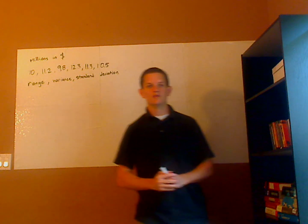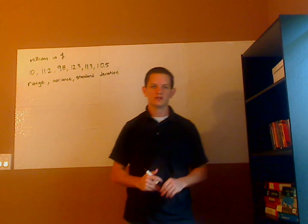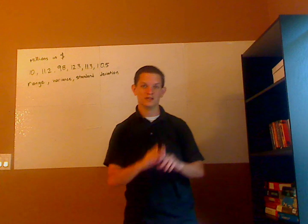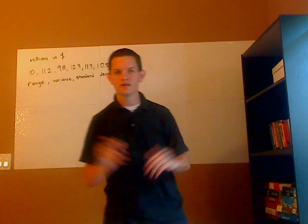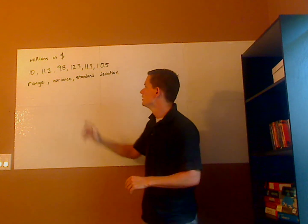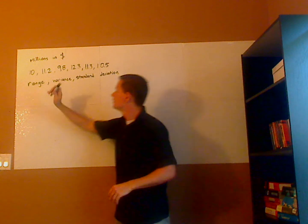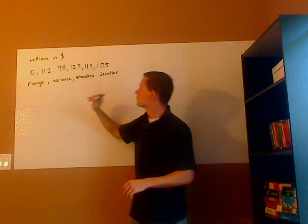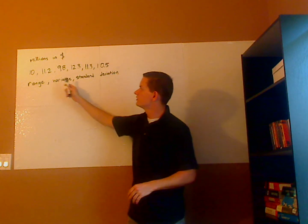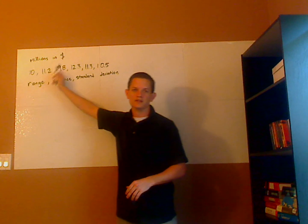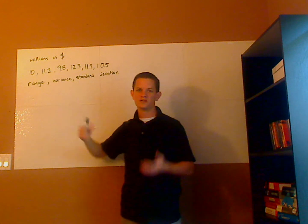Hi, I'm JD and we're going to be doing some measures of variation today. Variation has to deal with the spread of the data, and what I put on here is a sample. It's a sample over the course of six years, each year is in millions of dollars, and it's dealing with sales.